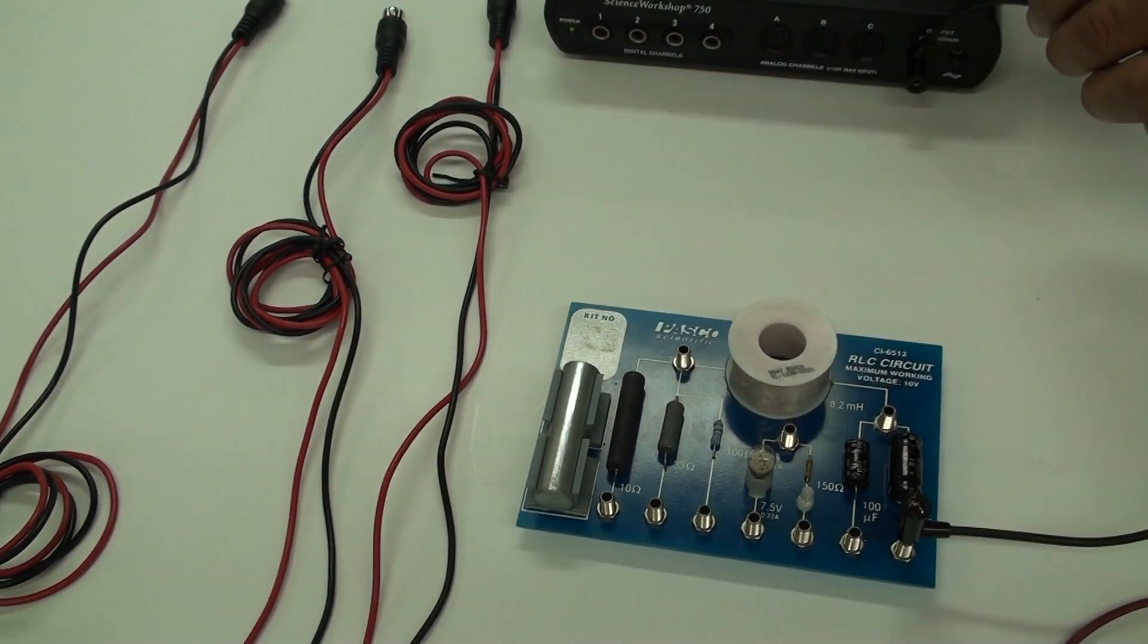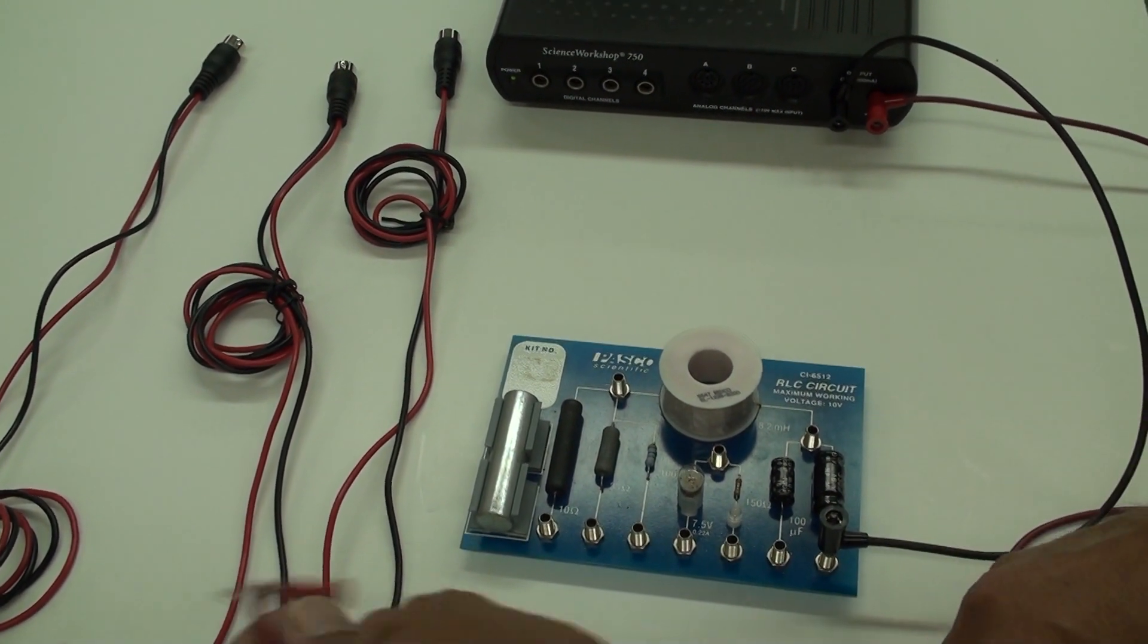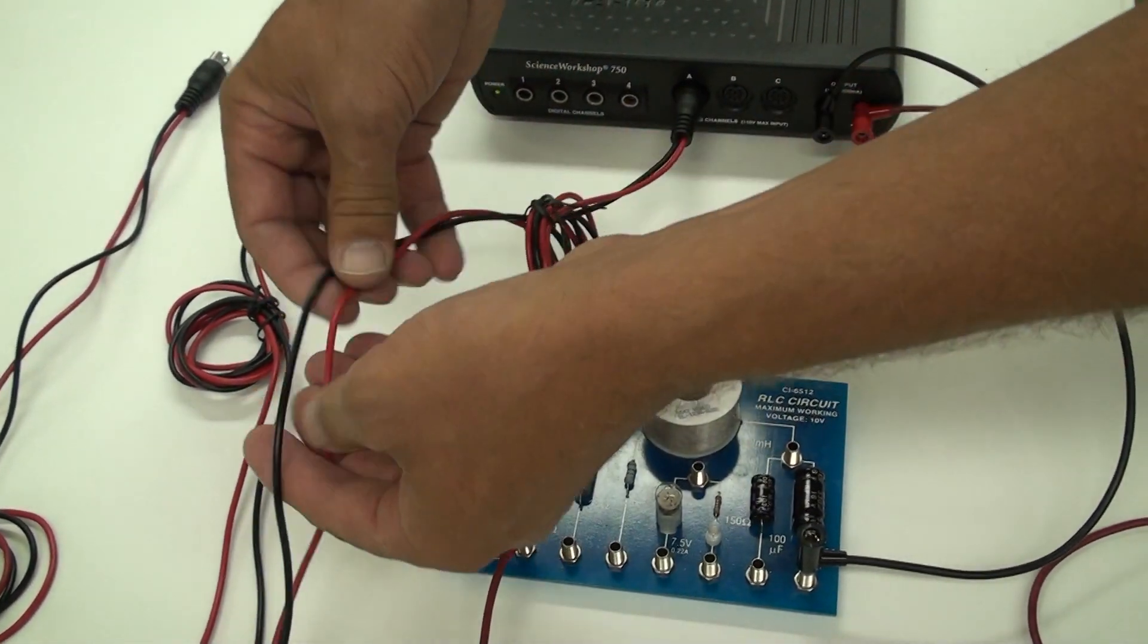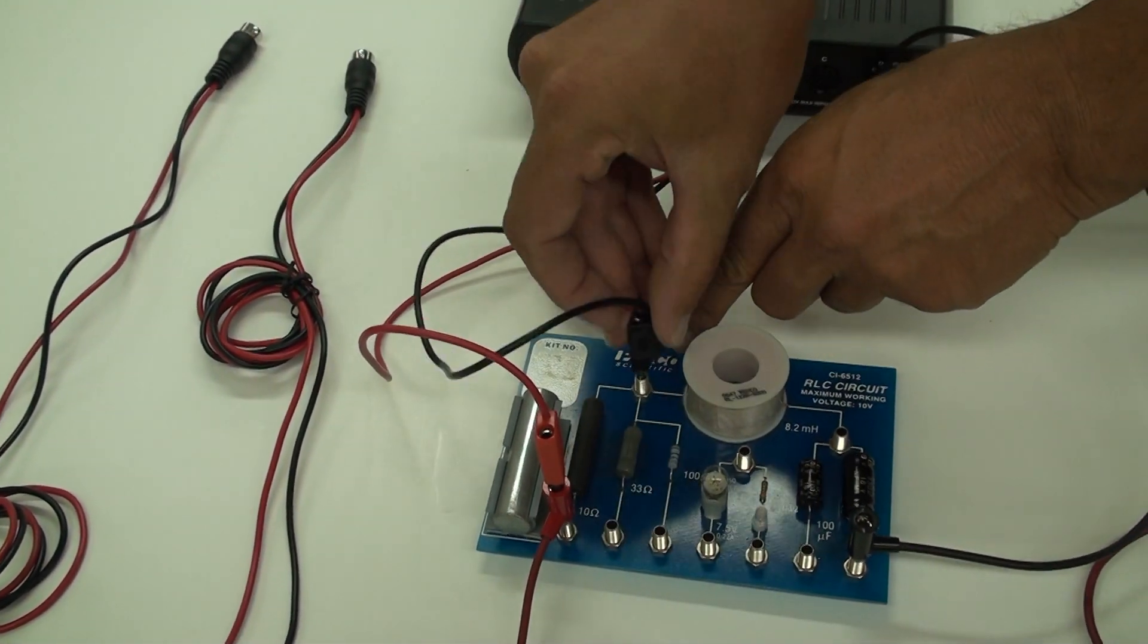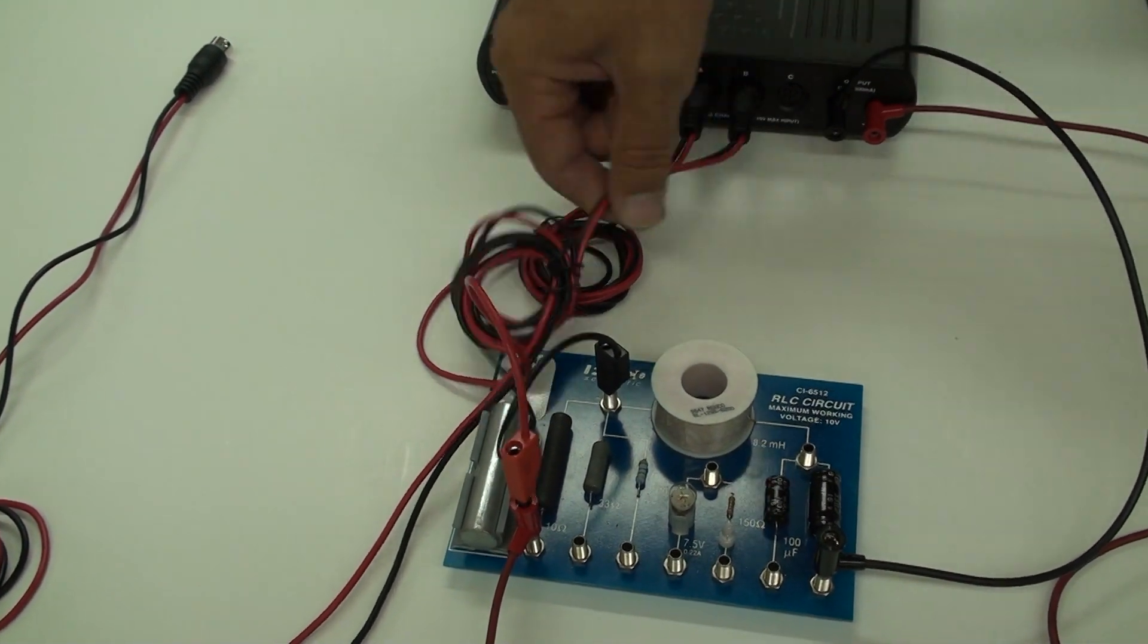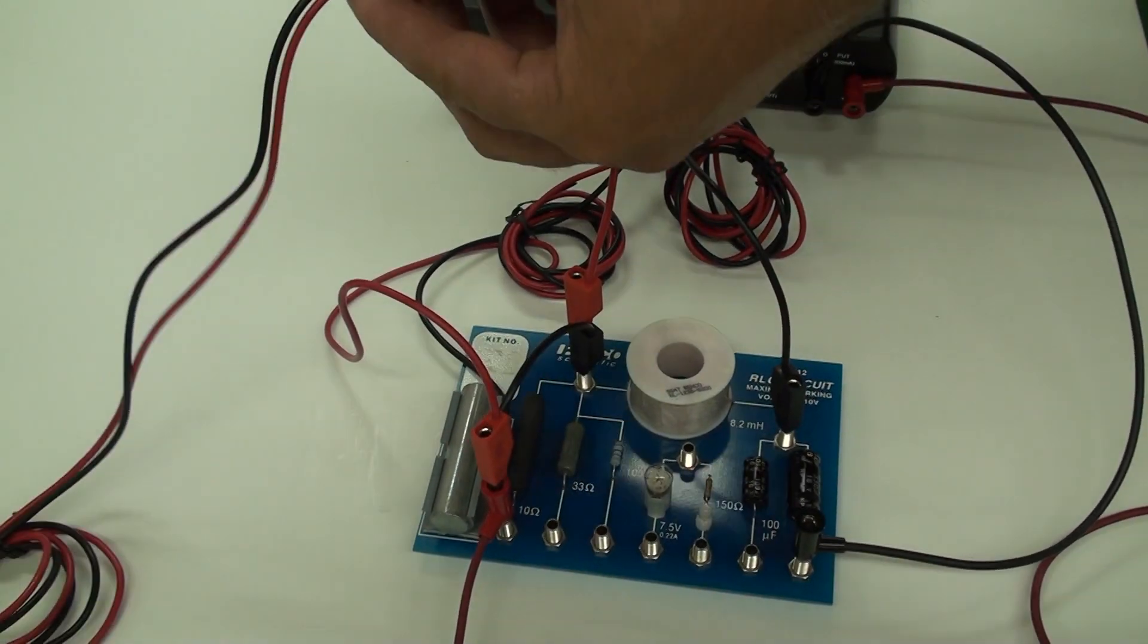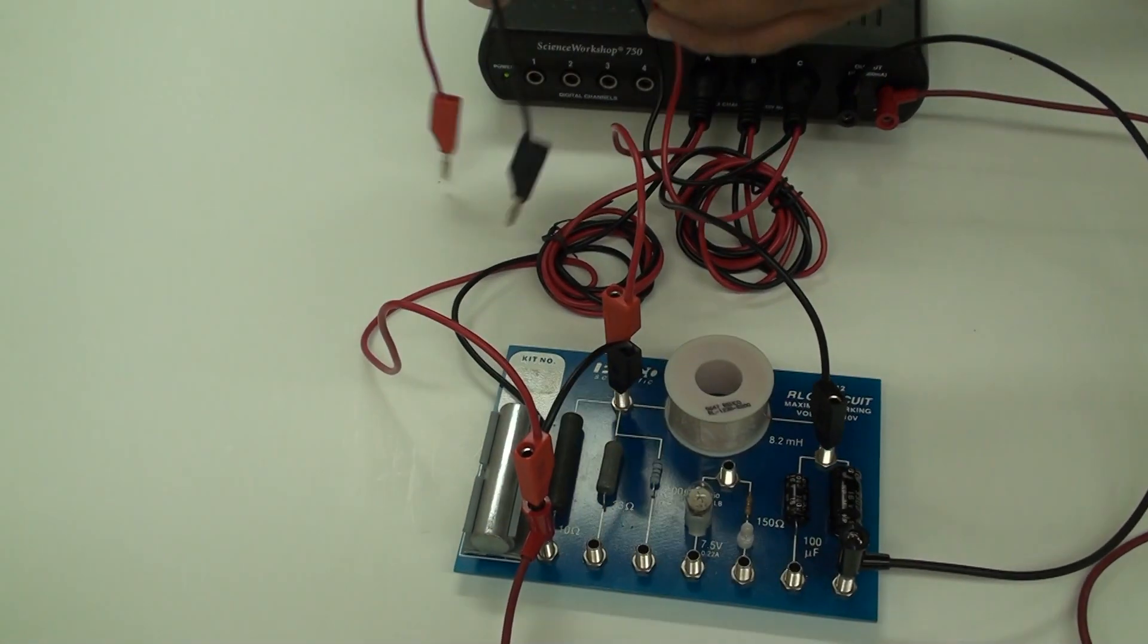Here is how we set it up. First, the AC voltage source. Notice where the red wires are placed. The probe for measuring resistor voltage goes to input A. The probe for measuring inductor voltage goes to input B, and the probe for measuring capacitor voltage goes to input C.